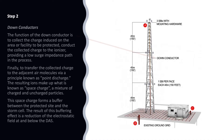Step 2: Down conductors. The function of the down conductor is to collect the charge induced on the area or facility to be protected, conduct the collected charge to the ionizer, providing a low surge impedance path in the process, and finally, to transfer the collected charge to the adjacent air molecules via a principle known as point discharge.